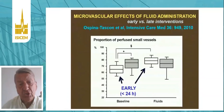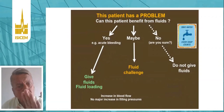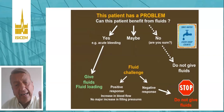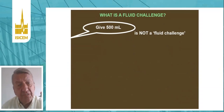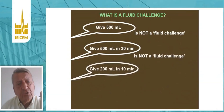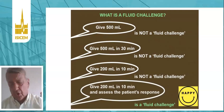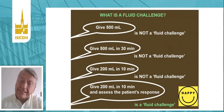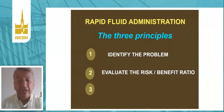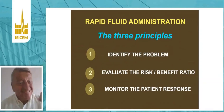Let me finish by saying: if the patient has a problem and we don't know if the patient will benefit from fluids, then we look at a fluid challenge. 5 cc's of fluid is not a fluid challenge. 5 cc's in 30 minutes is not a fluid challenge. 200 cc's in 10 minutes — almost there — but we need to monitor the patient's response, preferably with a measure of flow (benefit) and a measure of pressures (risk). Identify the problem, evaluate the risk-benefit ratio, and monitor the patient's response. These are the three principles of a proper fluid challenge. Thank you.